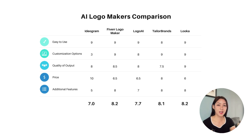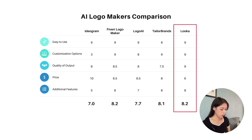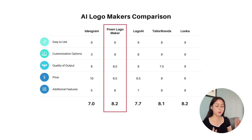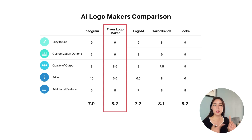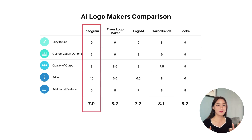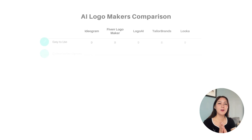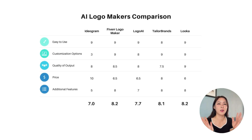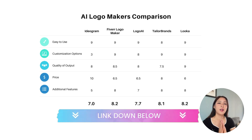To end this video, here's a summary table with all the ratings for these tools. If you want ease of use with tons of customization and branding options, Looka is the best. For a simple logo design, go for Fiverr Logo Maker. If you need small business services like email or website, go for Taylor Brands. And if you just want a simple logo for free, then go for Ideogram. All the links are down below if you want to try them.